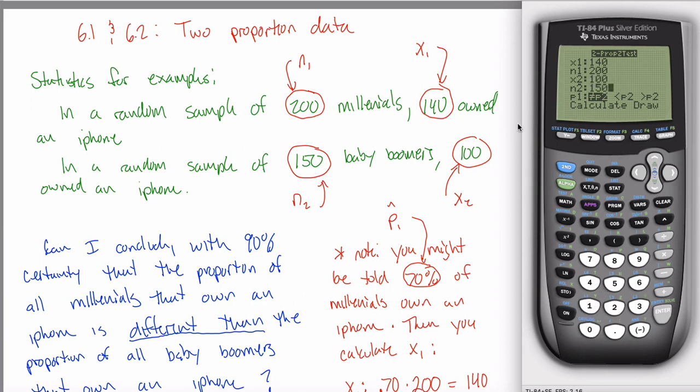For whatever it's worth, a common mistake here is to switch up the Xs and the Ns. A lot of people want to put the 200 first and the 140 second. If your value of X is bigger than your value of N, your calculator will give you an error. It's like, what do you mean 200 out of my 140 people? That doesn't make any sense. Another thing that will give you an error is if you try putting in 0.70 in here for X. Note that it does not want the sample proportion. It wants the number in the sample that have the given criteria.